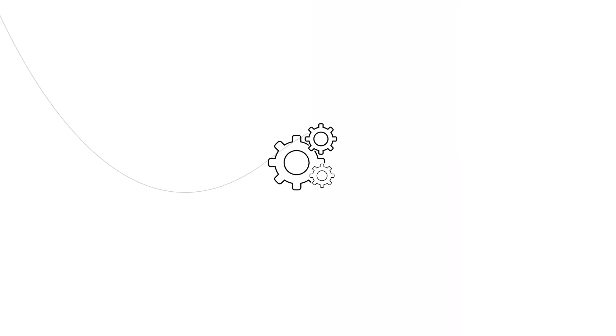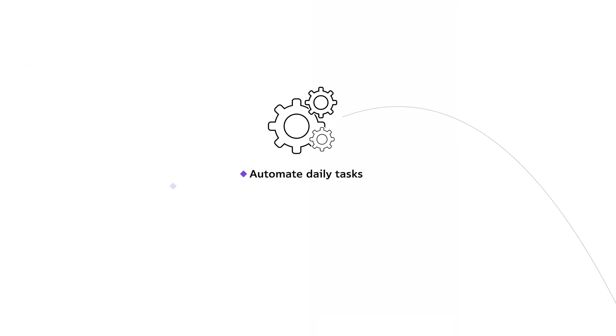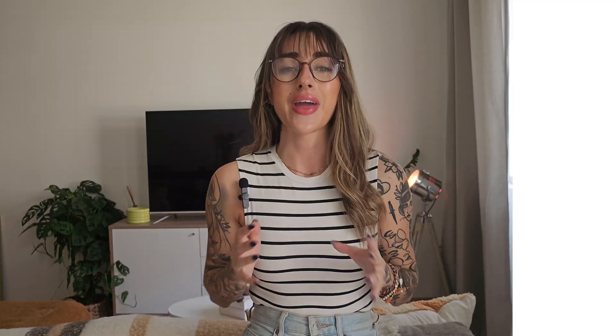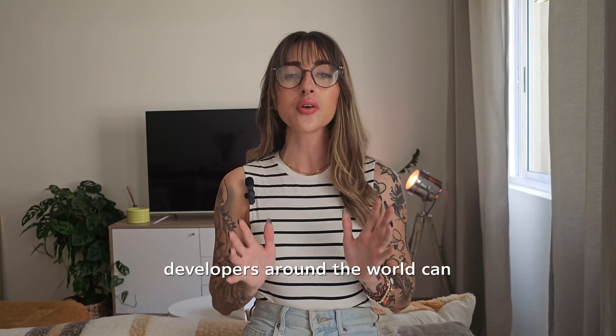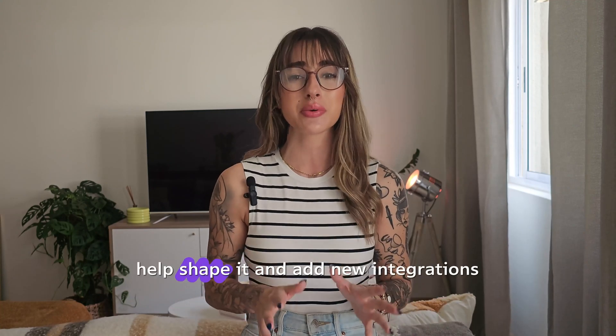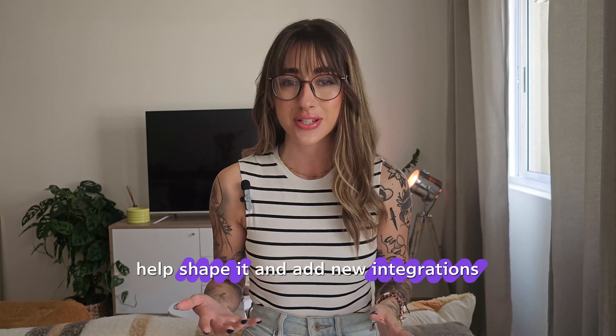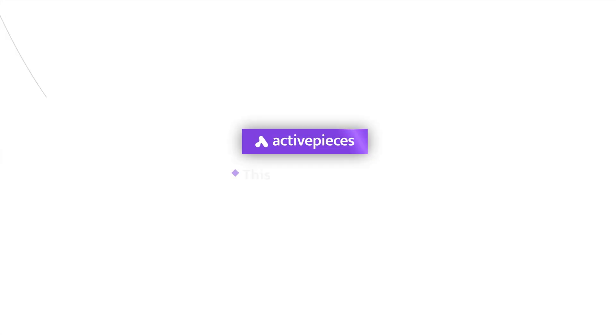Imagine a tool that helps you do just that — automate daily tasks without needing to write a single line of code. With AI at its core, Active Pieces is designed to make automation accessible, and because it's open source, developers around the world can help shape it and add new integrations. This is Active Pieces.